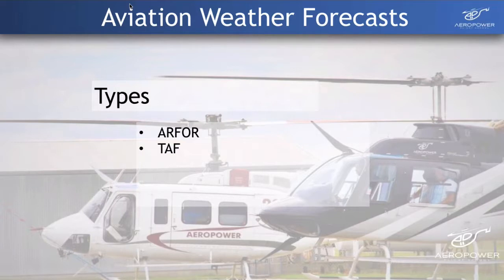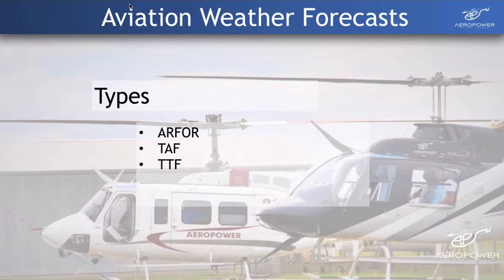The second one is a TAF — the Terminal Area Forecast — and this is the focus of what we've got on today. Next is the Trend Type Forecast, the TTF. We're going to cover it today, but it's very much like a TAF, except it's for larger airfields and has a three-hour validity period. These are generally considered fairly accurate because they're updated quite regularly.